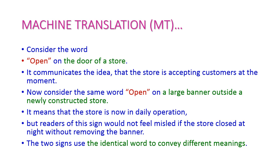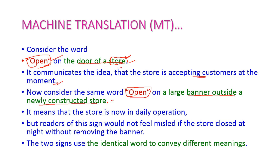Let us see one example. Consider the word 'open' in front of the door of a store. That means the store is accepting customers at the moment — the previous day evening the store was closed, and the next day morning it got opened. This is the meaning of 'open' in that particular context. Now consider the same word 'open' in front of a large banner outside a newly constructed store.